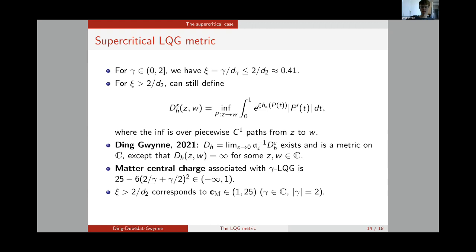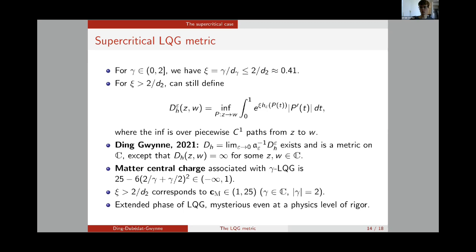Despite the fact that we can define a metric in this phase, this extended phase of Liouville quantum gravity — when the matter central charge is between one and 25 — is rather mysterious even at the physics level of rigor. It's not very well understood what should actually be happening with Liouville quantum gravity when the matter central charge is between one and 25. Let me now say a little bit more about what this metric actually looks like in the supercritical phase, when xi is bigger than two over d_2, or equivalently when the central charge is between one and 25.